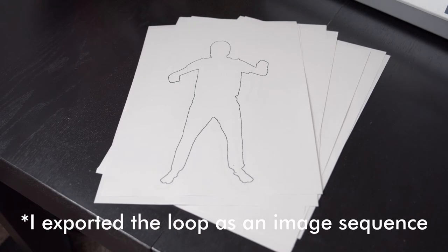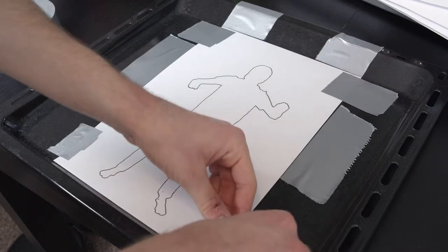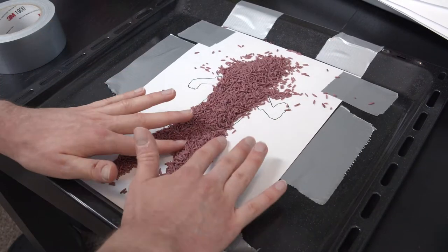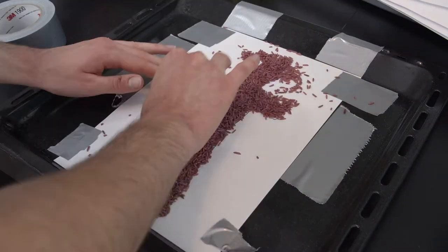I printed out all 12 frames of the dance loop, stuck the first frame onto another tray, and laid out the rice as per the outline. Then it was time to toss it.